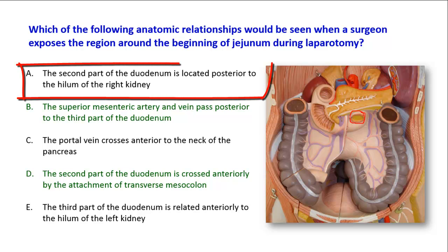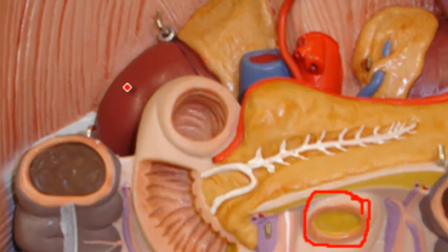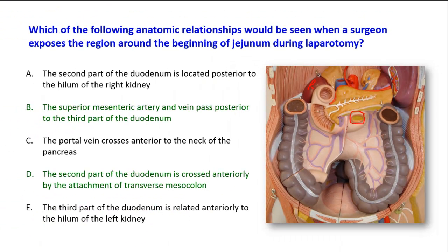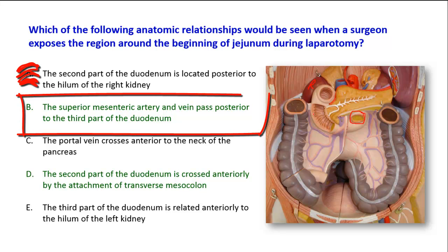The first choice is that the second part of the duodenum is located posterior to the hilum of the right kidney. Here you can see the right kidney. The second part of the duodenum is in fact located in front of the hilum of the right kidney. Both of them are retroperitoneal structures, so this option is wrong.